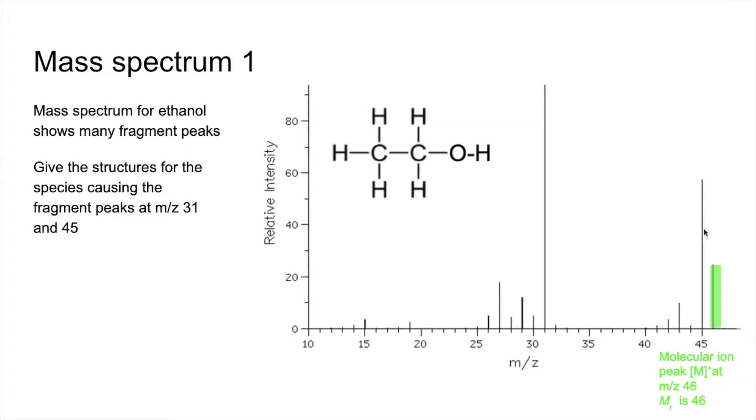These extra peaks with m/z values less than the molecular ion peak are fragment peaks, and they're caused by the high energy electron beam breaking bonds in the molecule and it basically splits apart. All we've got to do is give the structures for the species causing the peaks at m/z 31, that's that really tall one there, and m/z 45.